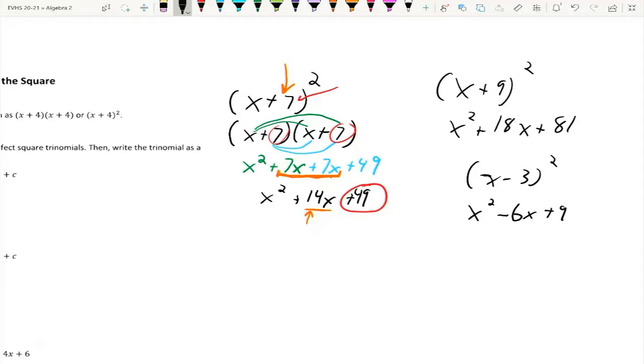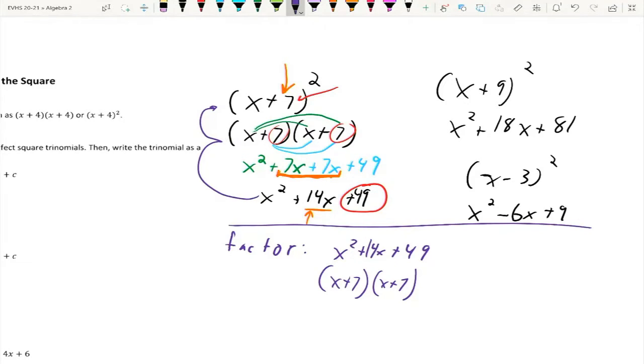Now I could also go the opposite direction with factoring. Let's say that I was given x² + 14x + 49 and I was asked to factor that. Well, I know that that thing could be rewritten as (x + 7)(x + 7). I know that because I'm working my way back up this chart. And then that would in turn be (x + 7)². So if I notice this pattern that this number cut in half is the exact same as the square root of that number, then it is a perfect square trinomial and I could factor it down to this.